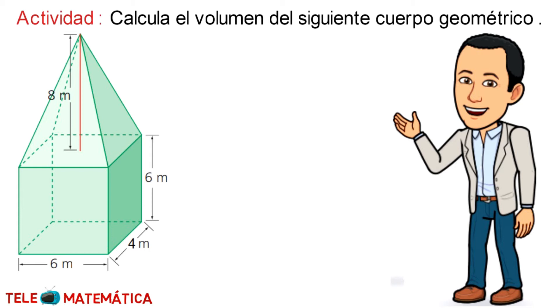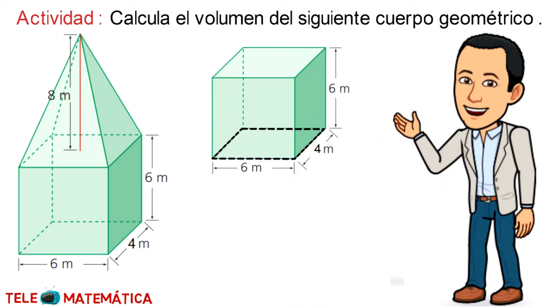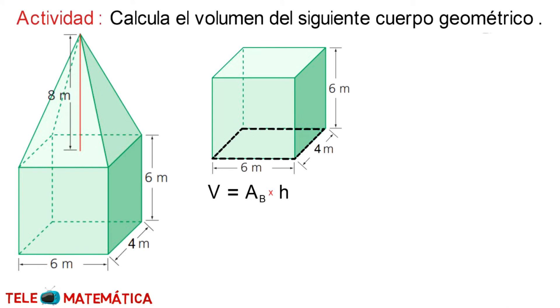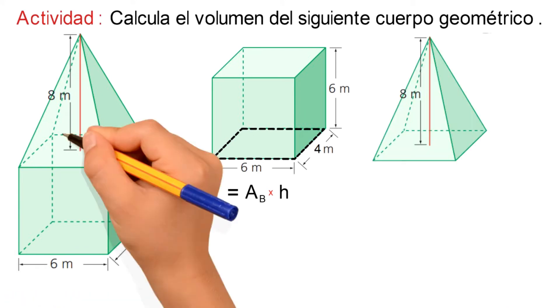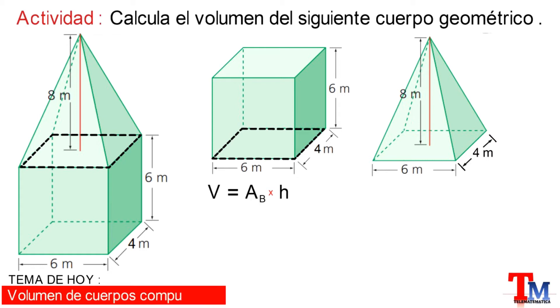La figura nos muestra un cuerpo geométrico compuesto por un prisma de base rectangular, cuya fórmula para calcular su volumen es área de la base por la altura. Y está compuesto por una pirámide de base rectangular también, ya que su base es la base superior del prisma, por lo que tiene sus mismas medidas. Y cuya fórmula para calcular su volumen es área de la base por la altura dividido para 3.